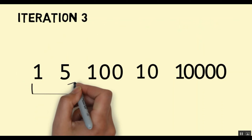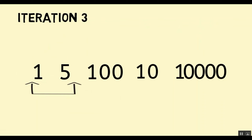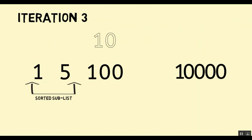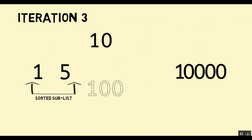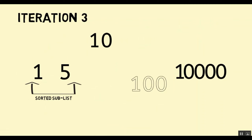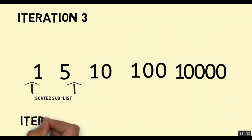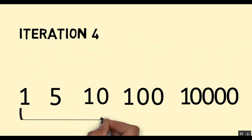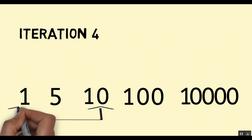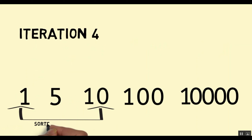Our sorted sublist will now have two elements: 1 and 5. Note that at the end of iteration 2 we have two elements in the sorted sublist, so at the end of the nth iteration we will have n numbers in the sorted sublist in general. From among the three remaining unsorted numbers, 10 was the smallest and was moved to the head of the unsorted sublist, swapping with 100. So now at the beginning of iteration 4, three numbers — 1, 5, and 10 — are in the correct position.